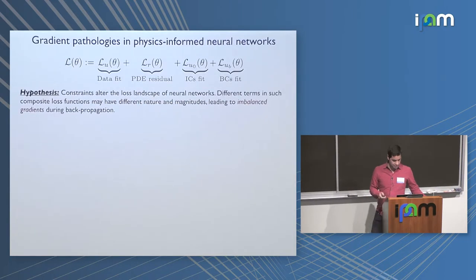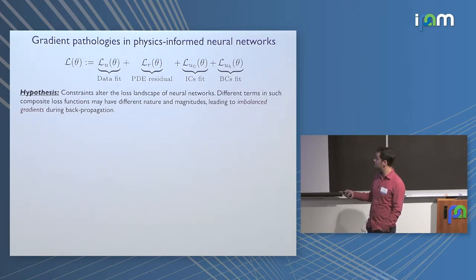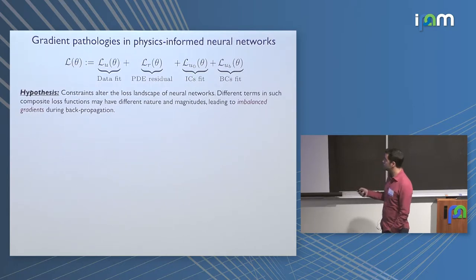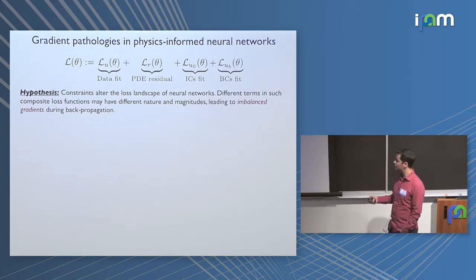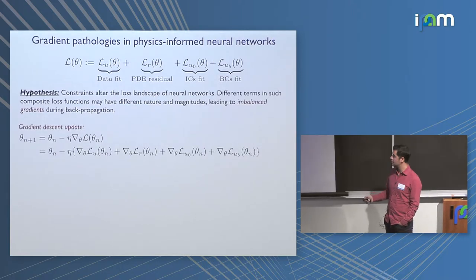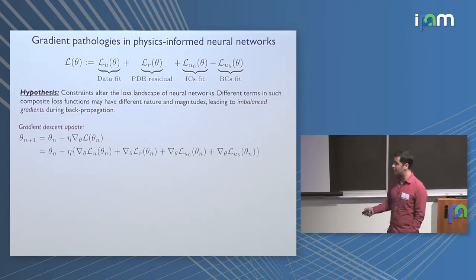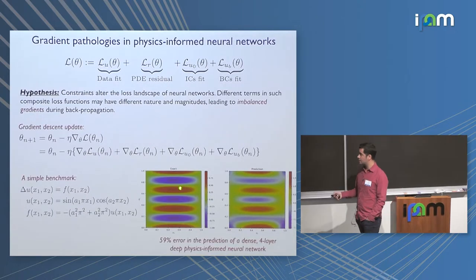The loss function of physics-informed neural networks has a composite form: a term fitting observed data, a term minimizing the PDE residual, and terms fitting initial or boundary conditions. The hypothesis is that such constraints alter the loss landscape, and different terms in this composite loss may have different natures and magnitudes, potentially leading to imbalanced gradients during backpropagation. This means one term may dominate — for example, the network minimizes the residual but fails to fit boundary conditions, making the solution non-unique or inaccurate.